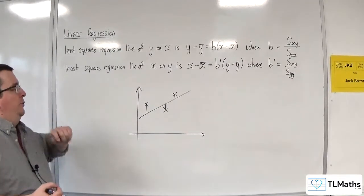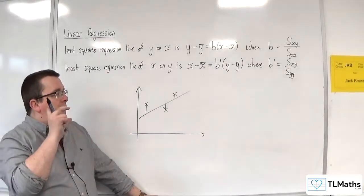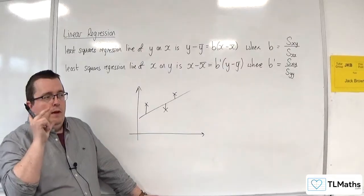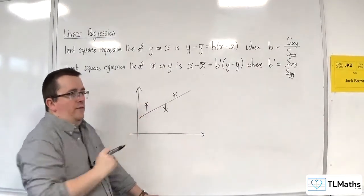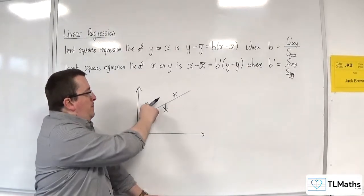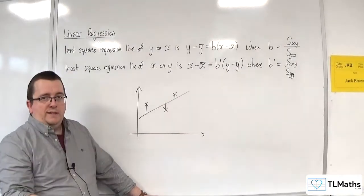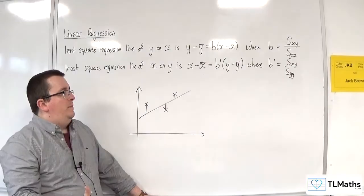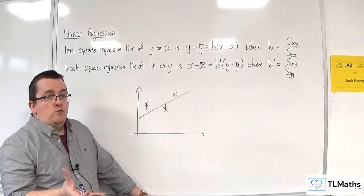You're trying to minimise those vertical distances. In the calculation, if you do that y value take away that y value and do that for all of them, these will be positive, these will be negative. So the issue becomes they're all going to start cancelling one another out.